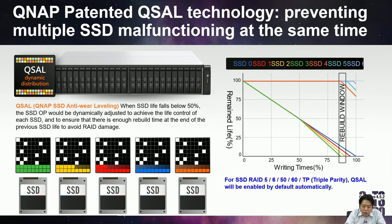After H4.5.2, if you create an SSD RAID with a parity type — such as RAID 5, RAID 6, triple parity — Q-SAL will be enabled by default automatically to protect your SSD array.